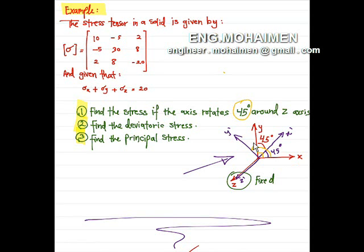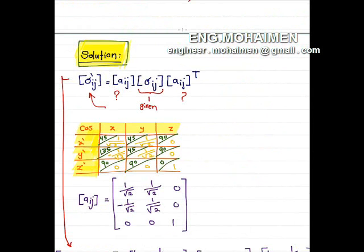In order to find any stress after rotating, we need to use this equation: sigma-prime, which is the stress after rotating, equals matrix A times the stress matrix (which is given) times the transpose of matrix A. In order to find the A matrix, we need to do this step here, and in order to find the cosine of the angles...